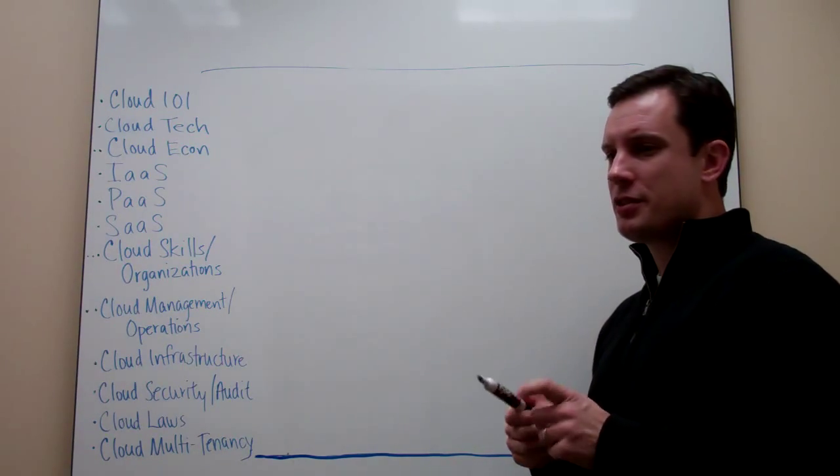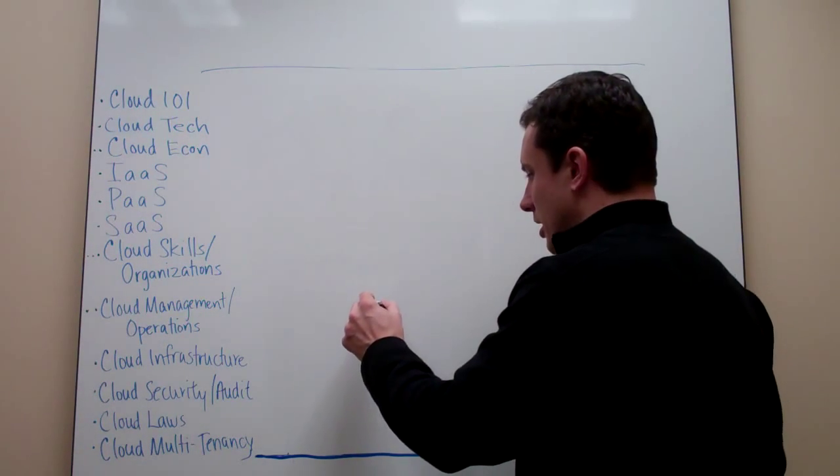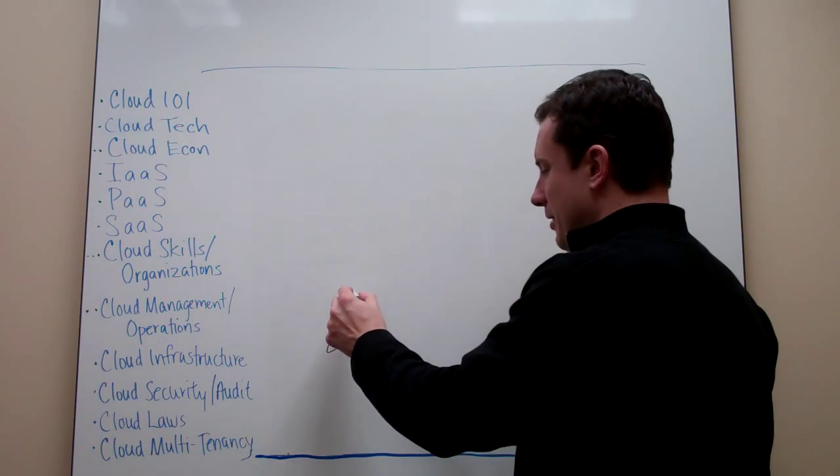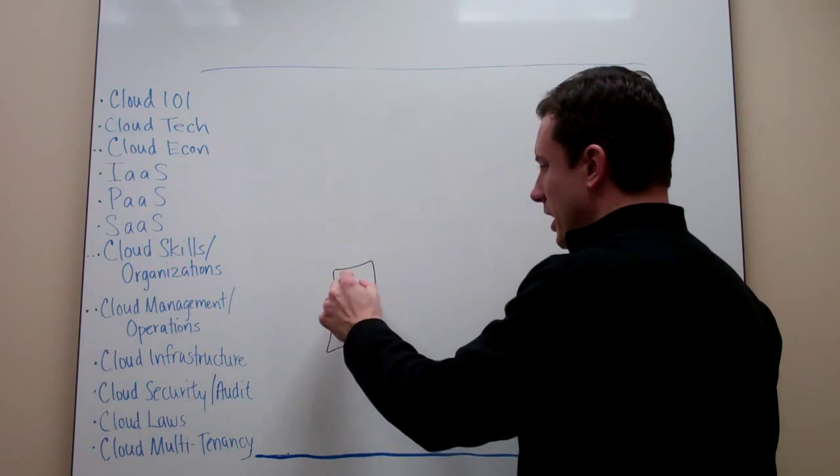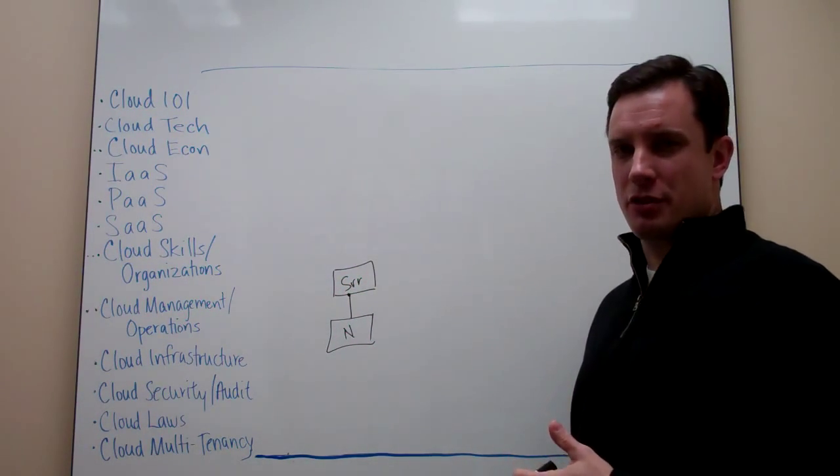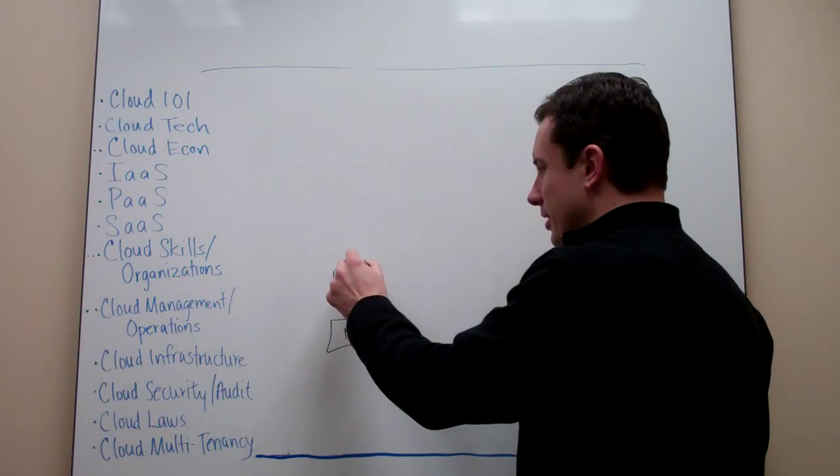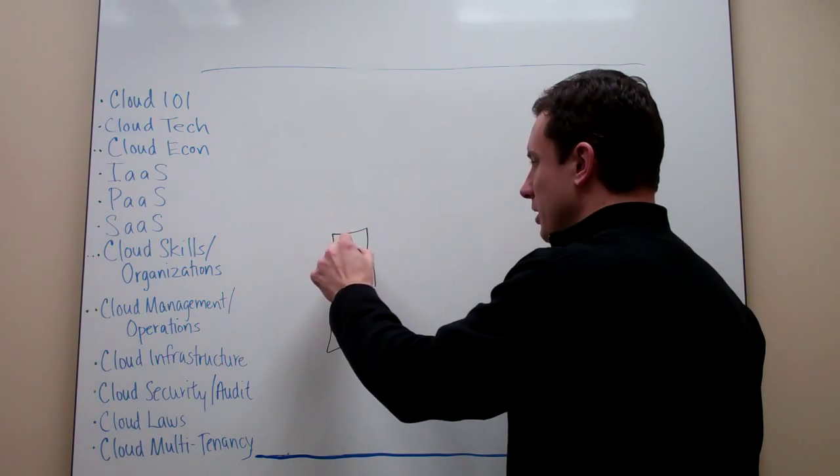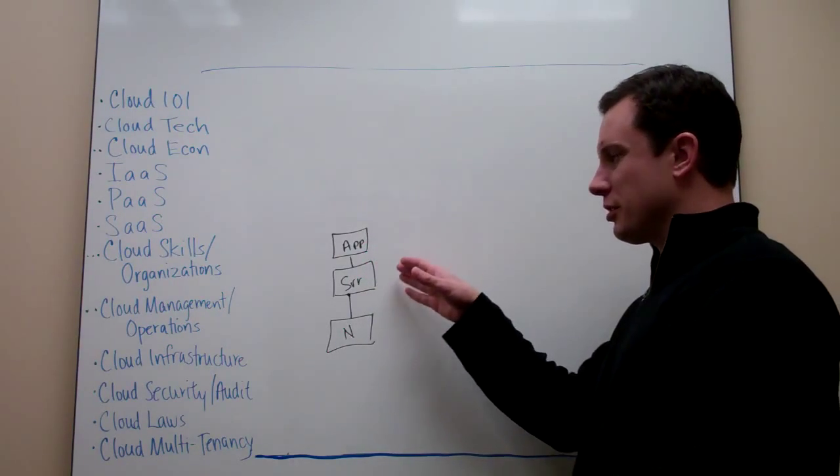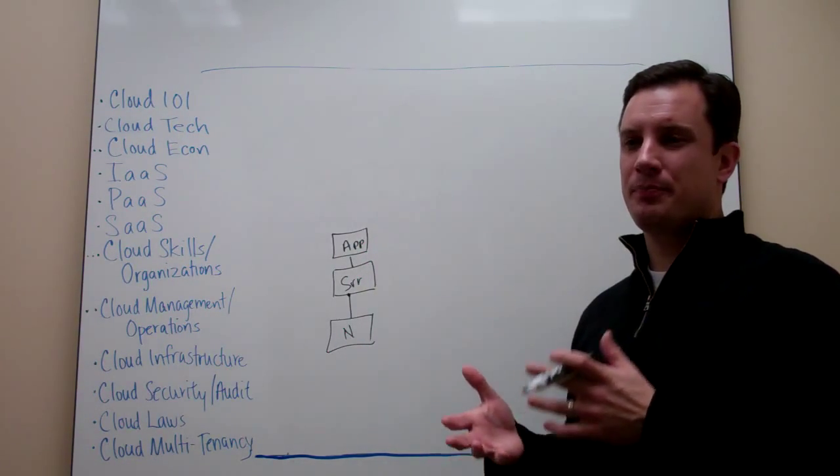So, the first thing that happens is we used to talk about having a network and there was a demarcation between the network and a server, right? The demarcation was where that port stopped on the server. And then you'd have your application that would live on top of that. And in some cases you had a single server or a cluster of servers dedicated to an application.